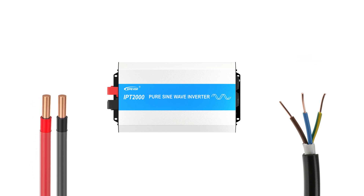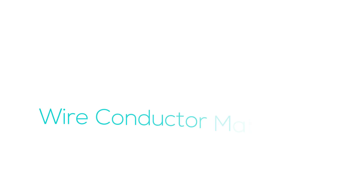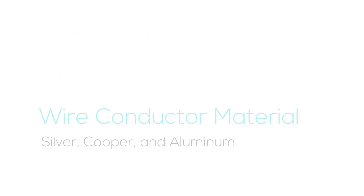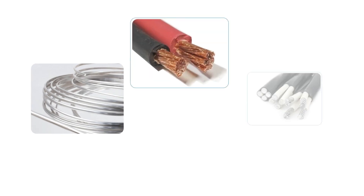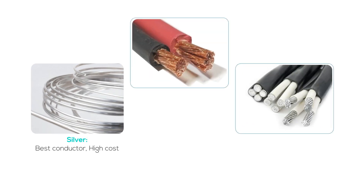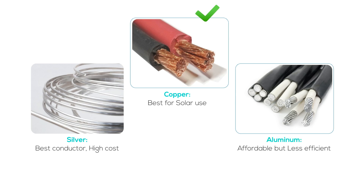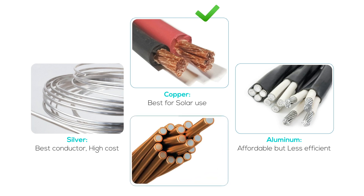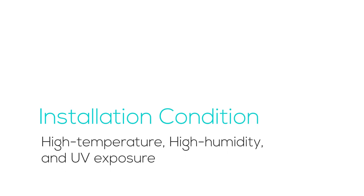On the DC side, avoid using non-flexible cables. In terms of cable materials, there are three main choices: silver, copper, and aluminum. Silver is a top conductor but too expensive for solar use. Copper is the favorite for solar because of its great conductivity. Aluminum, while cheaper, isn't as efficient and can mean more energy loss. Also watch out for copper-clad wires, which have aluminum inside — they can't carry as much current and may break or overheat over time.